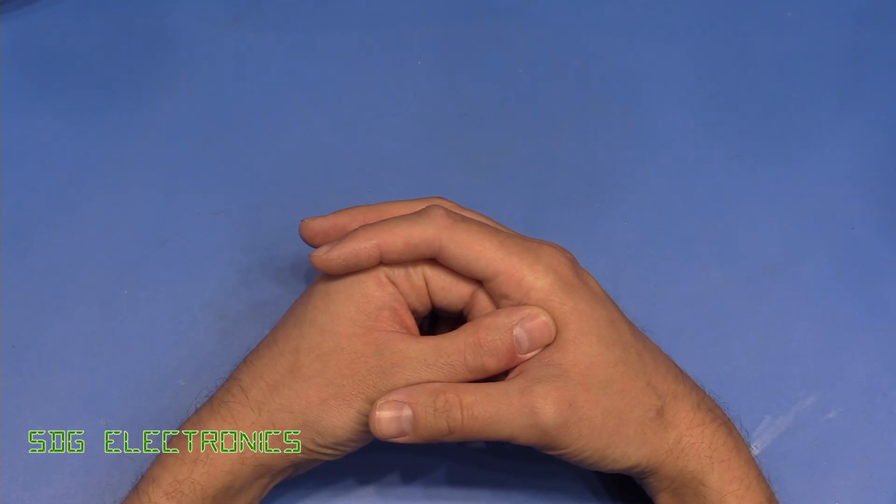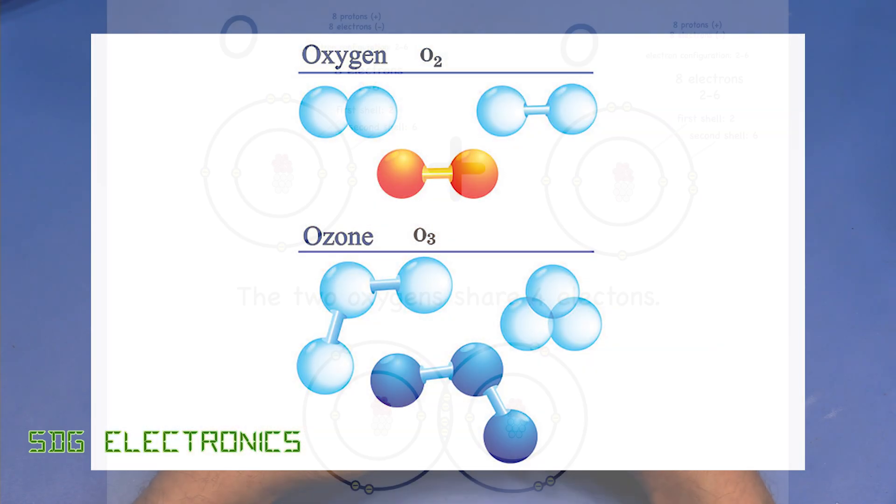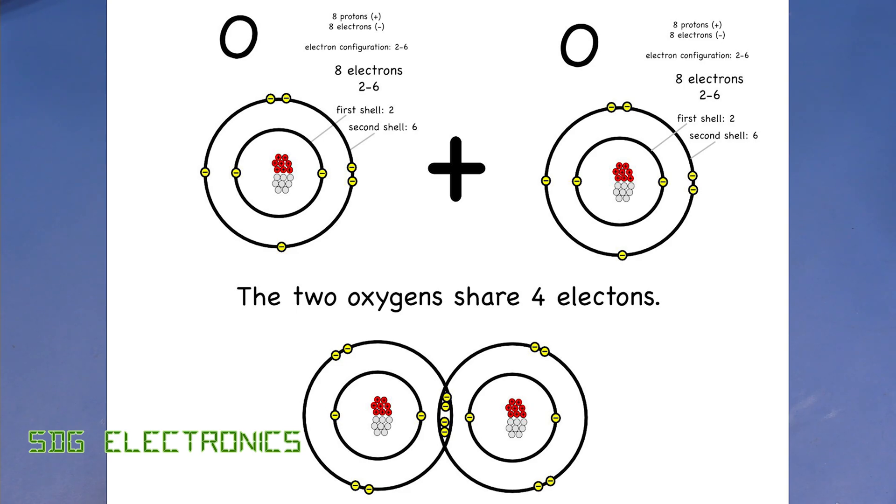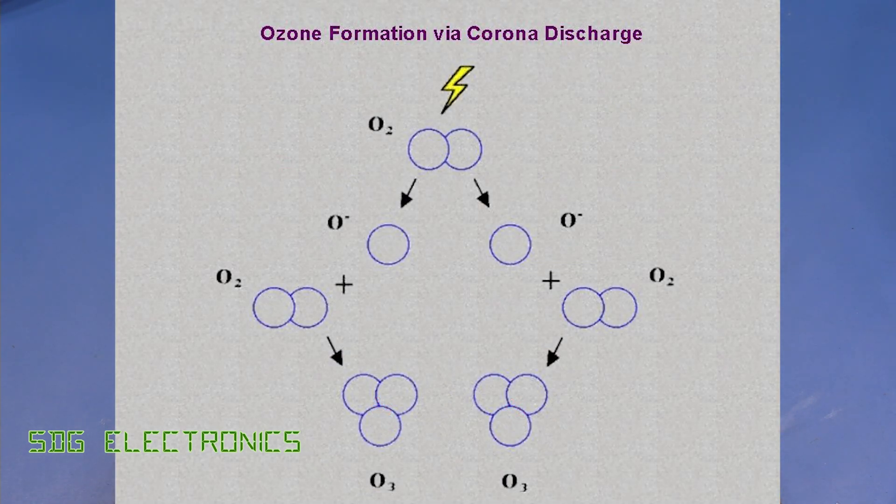Ozone is a naturally occurring gas formed from oxygen atoms. The oxygen molecule is made up from two oxygen atoms, and by using corona discharge, the two atoms can be split into single atoms.